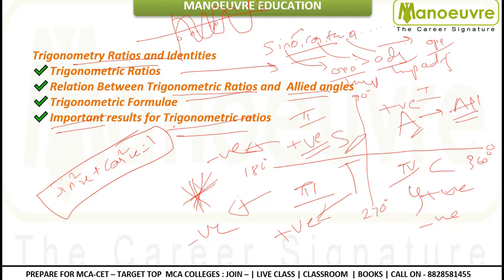There are also some important non-standard trigonometric ratios which appear in the exam — you need to remember these to solve questions quickly and gain a competitive edge over other aspirants. With around 25,000 people giving the exam, you should be able to solve more questions faster than your competitors.